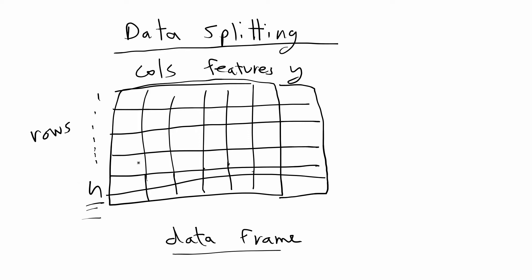Let's say you have observations from 100 people — that's your sample size. You're going to have 100 rows of data with observations of all the features and your outcome variable, and these columns and rows together make your data frame. When you want to do data analysis, you're going to want to fit different models to your data and then pick the best model that fits your data.